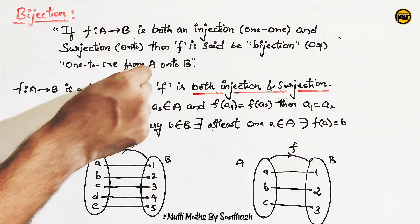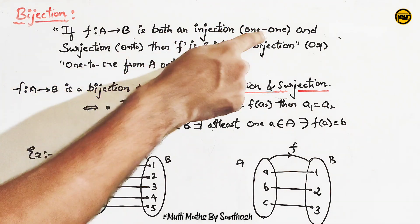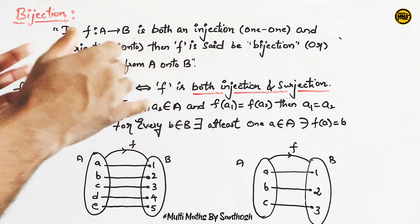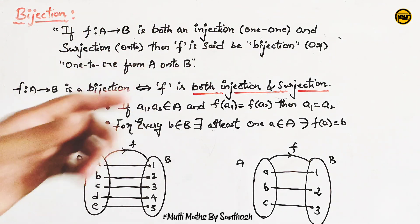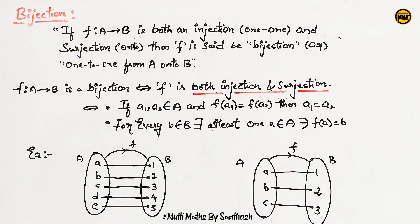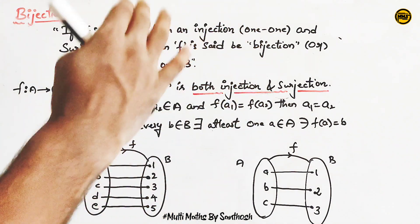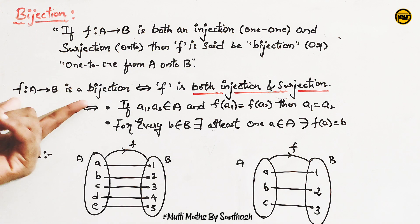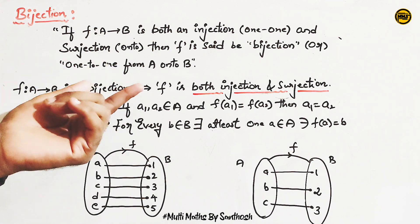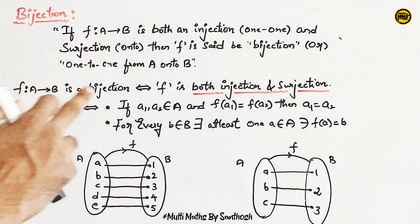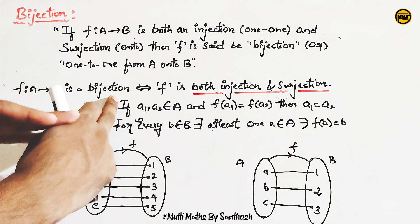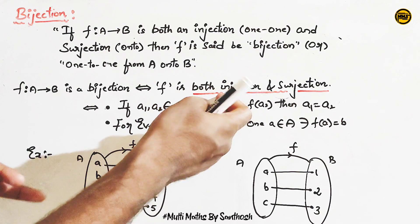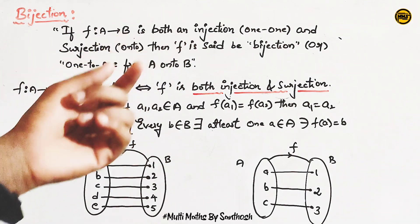So, 1-1 onto — if f from A to B is a bijection, that implies the function is a bijection, and f is both injection and surjection.